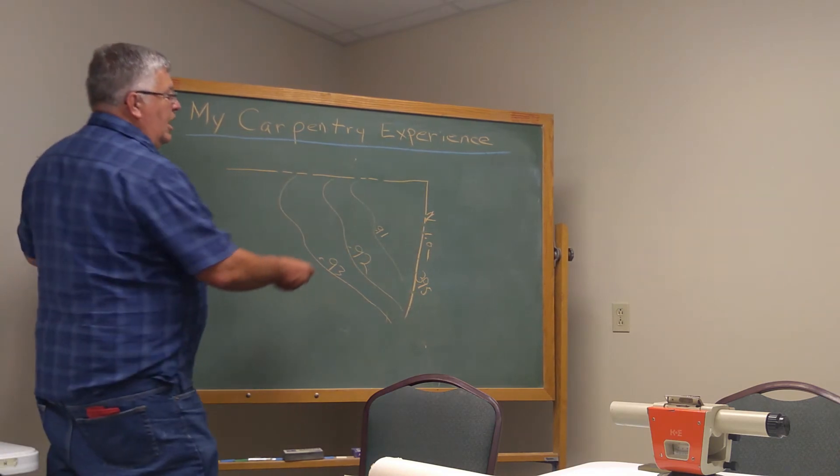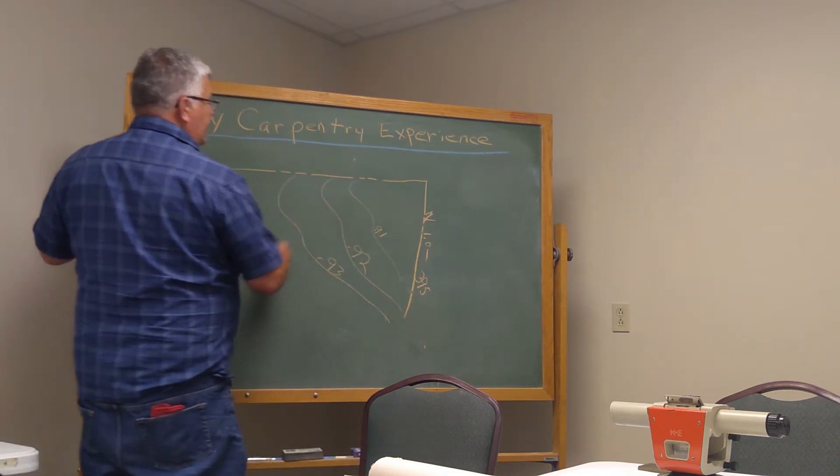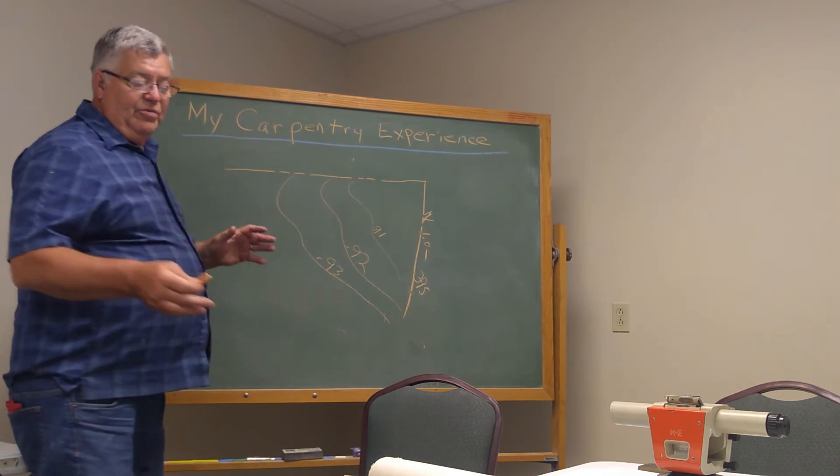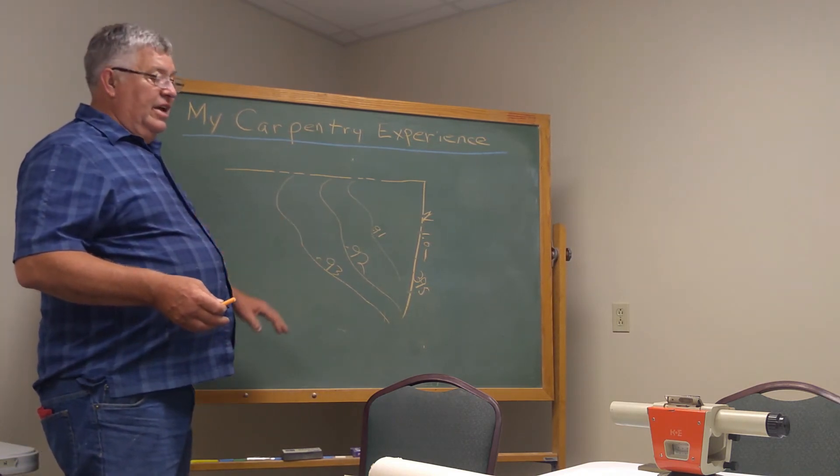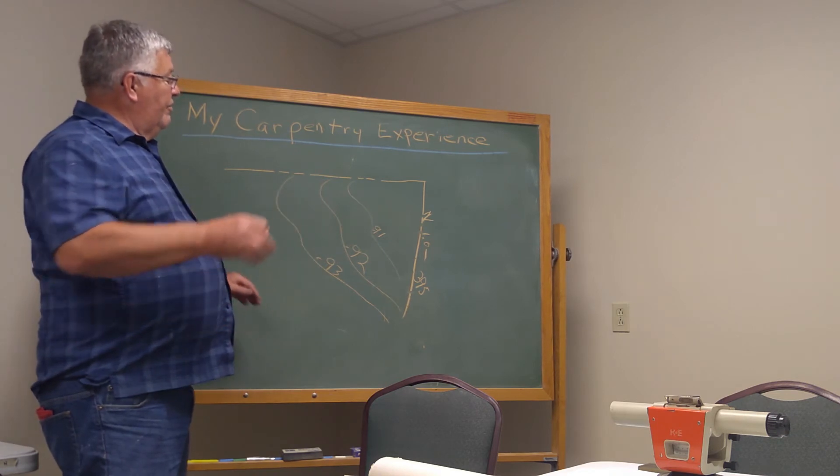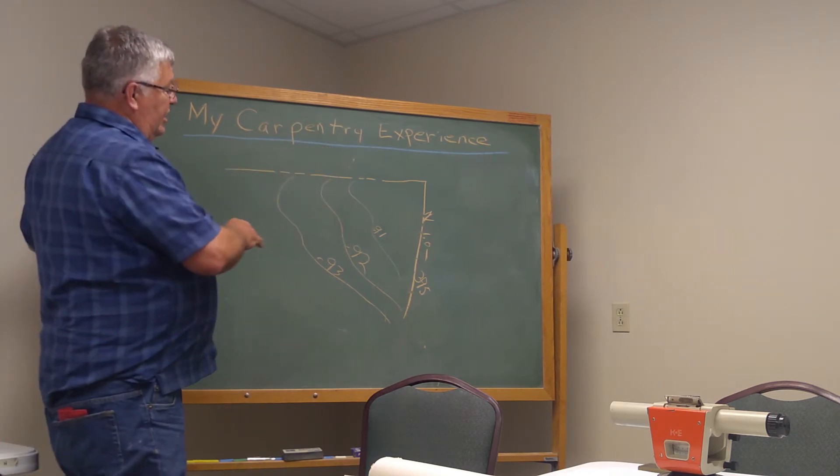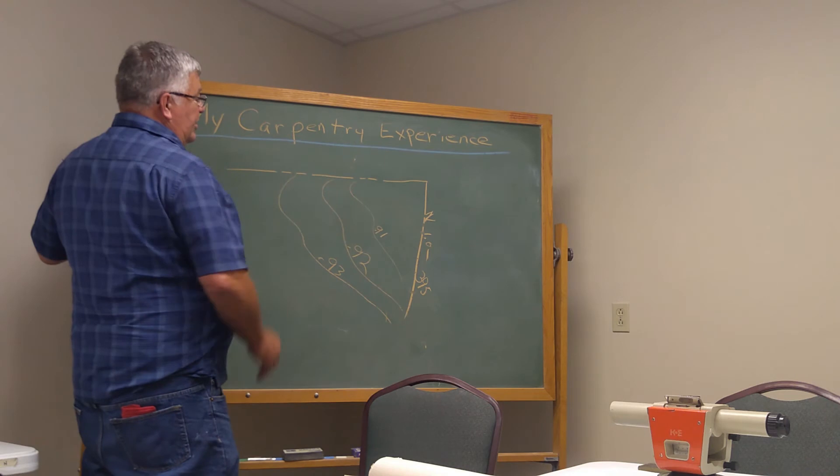These were what you call contour lines, so if you look at the drawing, it's not too hard to figure out what these mean. Each one of these is a different foot, there's a foot difference in elevation on each one of these lines.